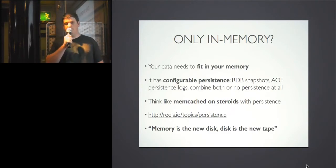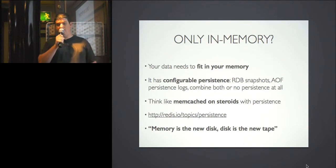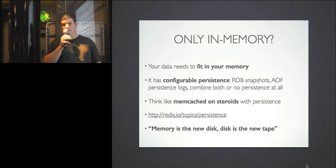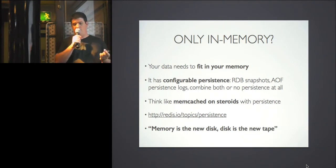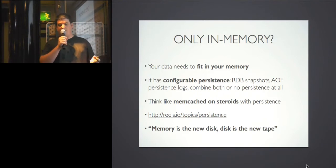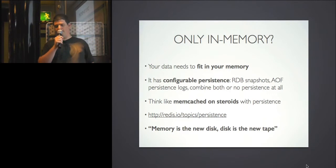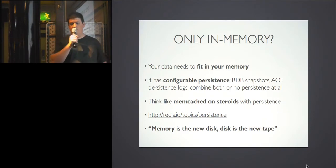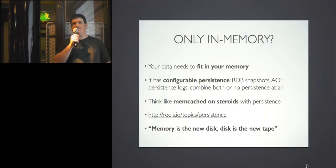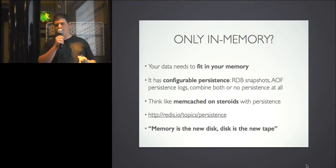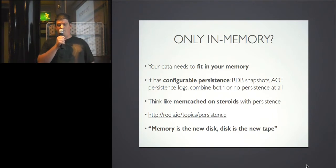One of the first things I want to address: Redis is believed to be only in-memory, and that's kind of true — your data set needs to fit in memory. But it's also persistent, and you can configure it in different ways. You can have RDB snapshots and configure how often you want them. In the config's save section, you can say: if 10,000 keys change in one minute, do a snapshot; or if 30 keys changed in the last five minutes, save them no matter what.